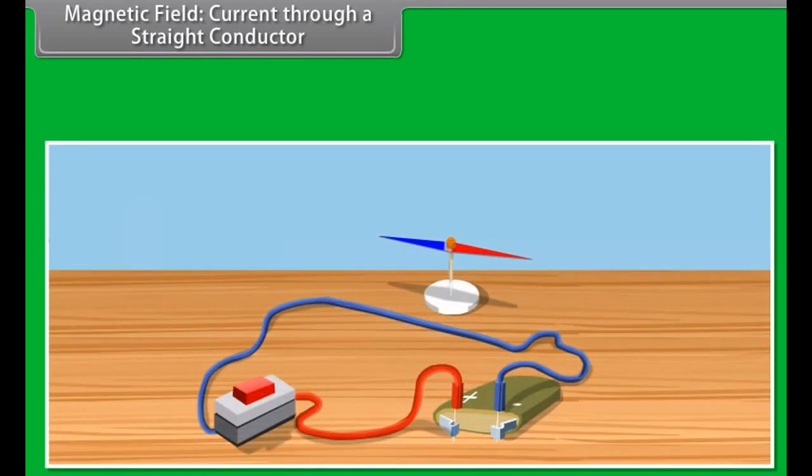Magnetic field. Current through a straight conductor. As you have seen earlier, let us see what happens when we change the current that is passing through the wire. The effect on the compass also varies. So, if you increase the current, the deflection of the needle of compass will increase.